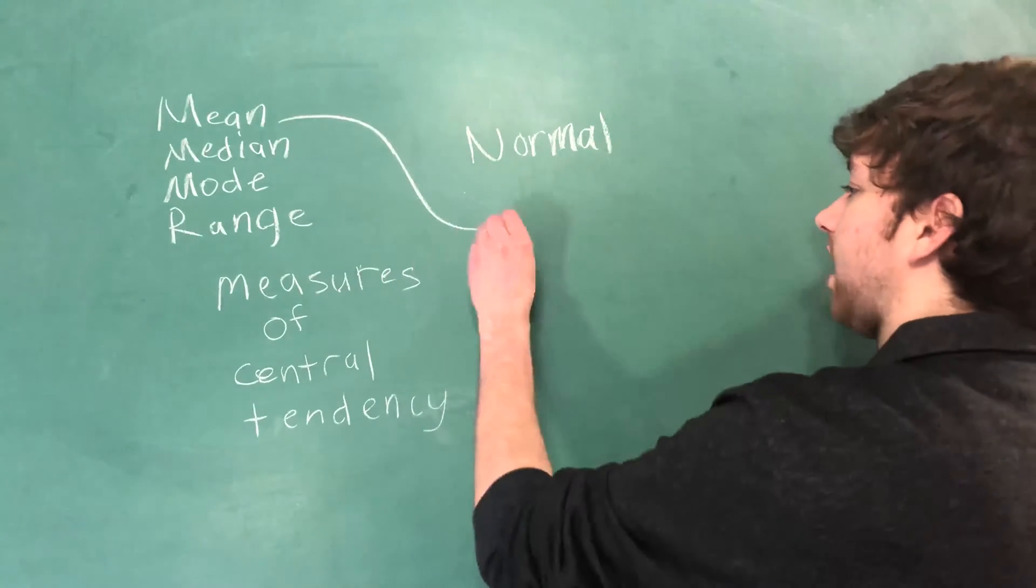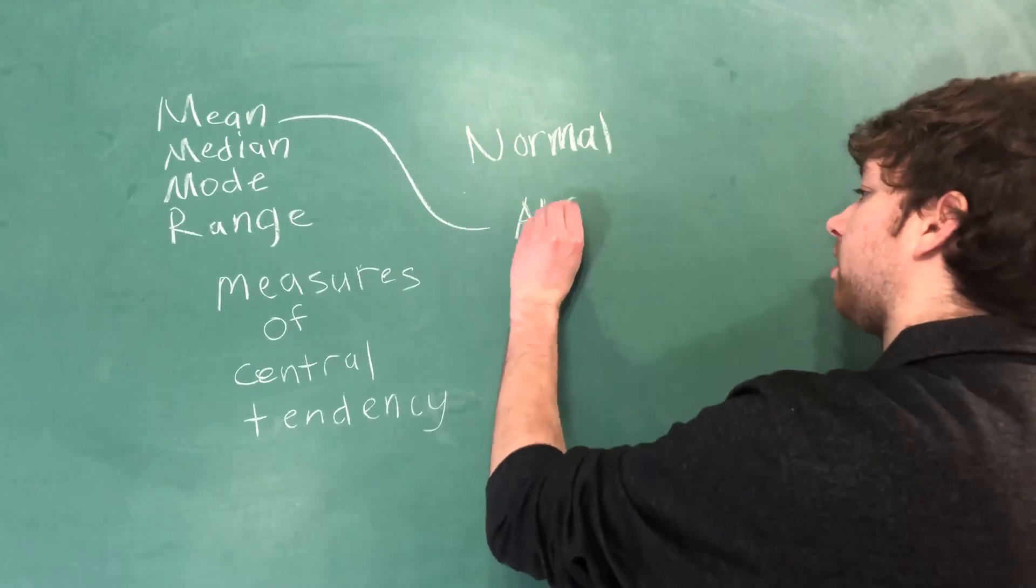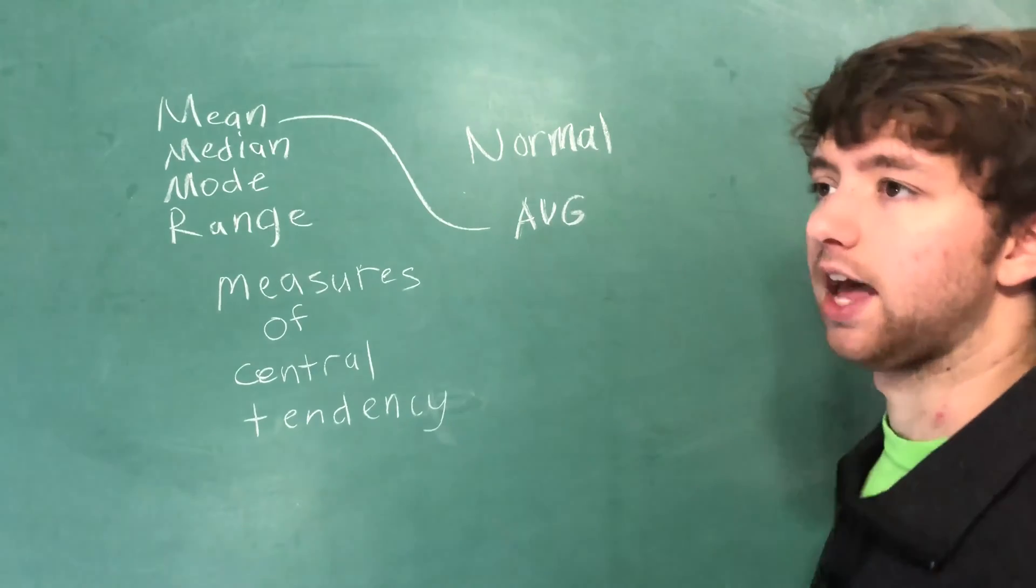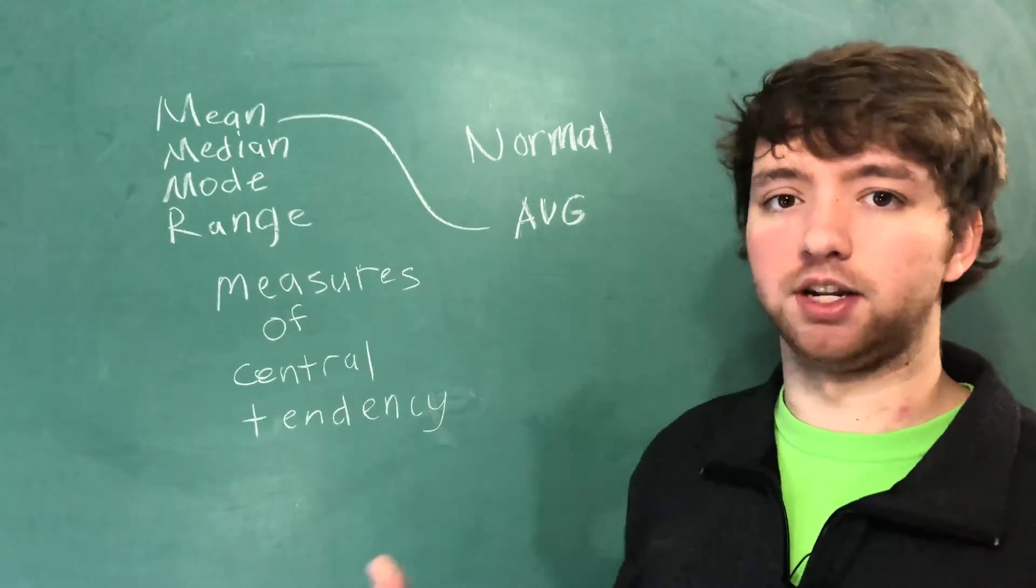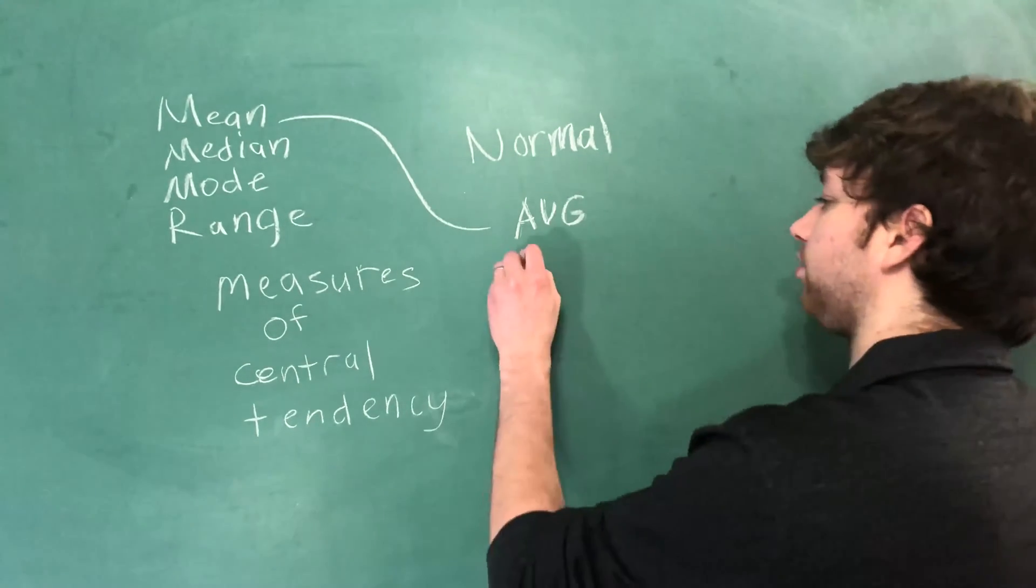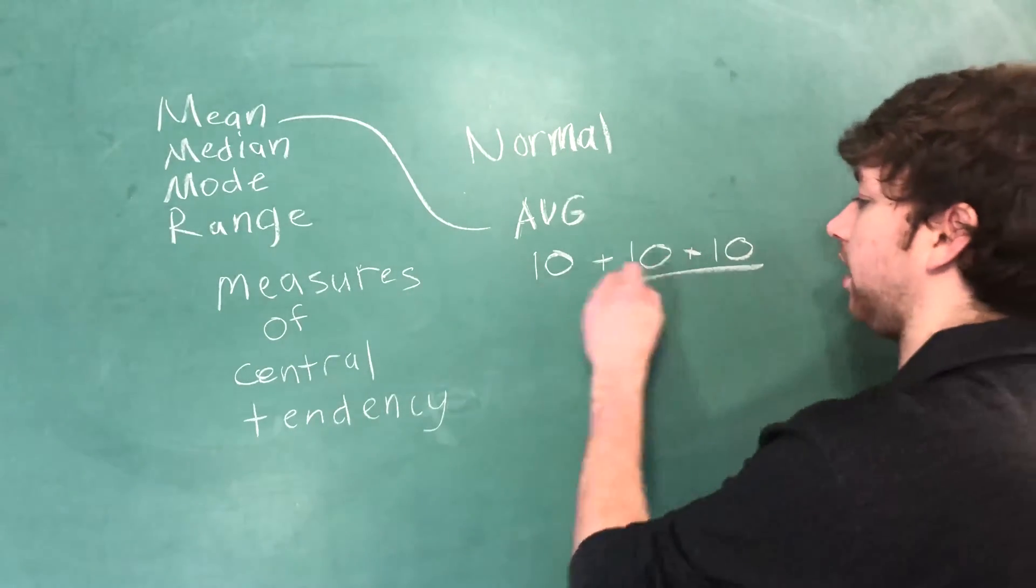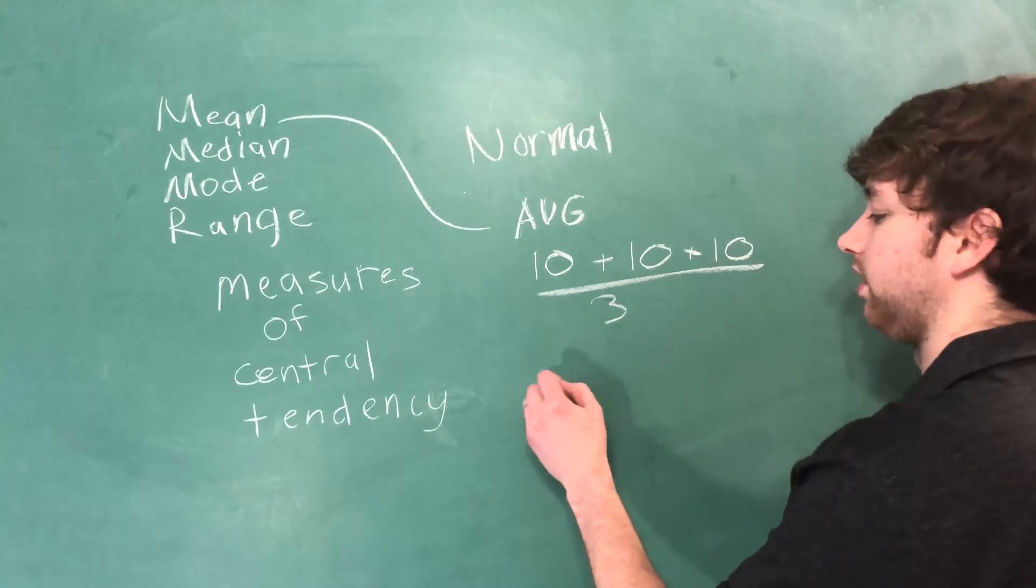The mean - this is just the average. The way you calculate that is you take all the values, add them up, and divide by however many there are. So if we had three values, you would take them, add them together, and divide by three, which gives you the value 10.